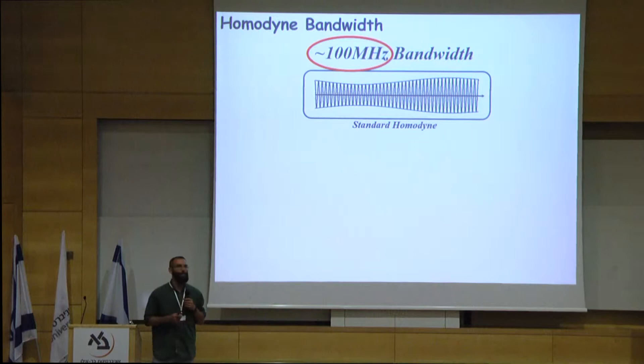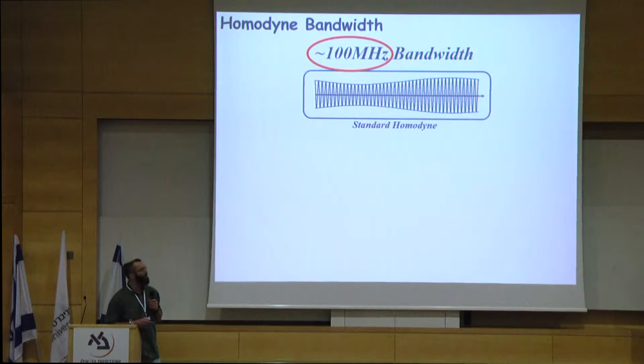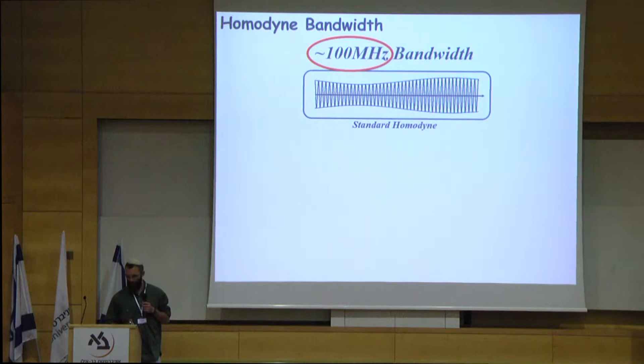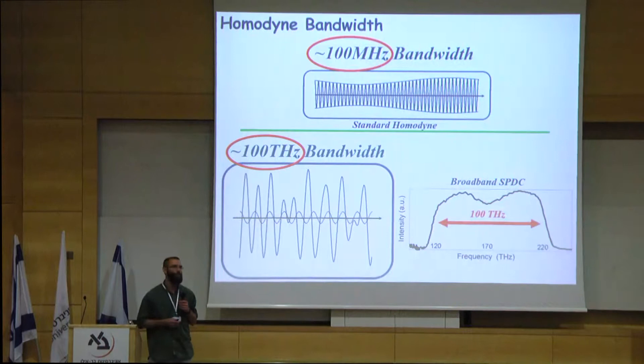It turns out that the standard technique for homodyne detection is bandwidth limited. It can only measure a field with slow variations over millions of optical cycles, with an electrical bandwidth of maybe megahertz to gigahertz range. But it can come nowhere close to measuring a field where both phase and amplitude vary at rates that compare to the single optical cycle itself.